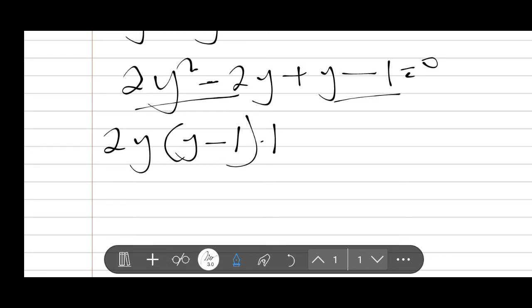Plus, what is common in y minus 1? The common factor is 1. 1 into y is y. Minus 1 into 1 is 1. It's equal to 0.